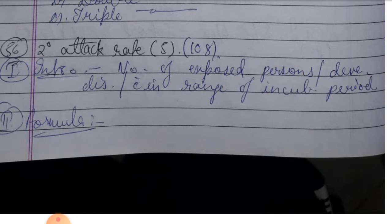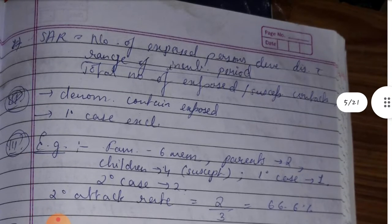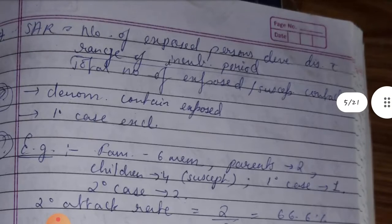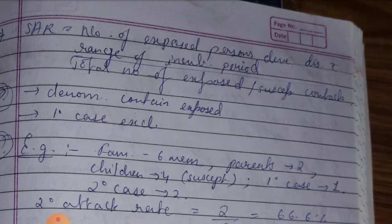Secondary attack rate is the number of exposed persons developing disease within the range of the incubation period, upon the total number of exposed or susceptible contacts.